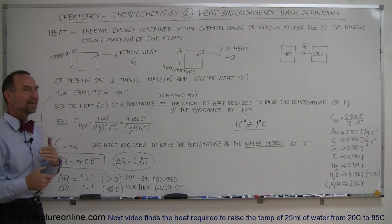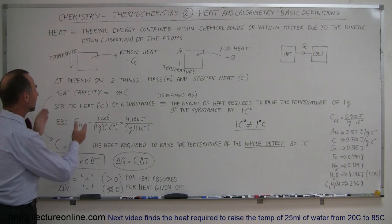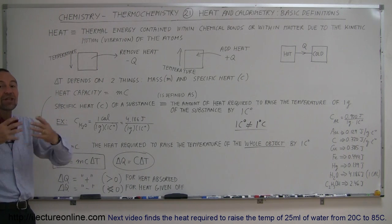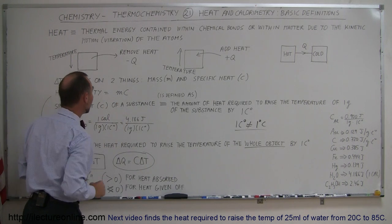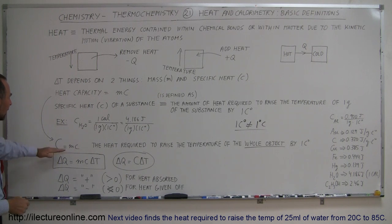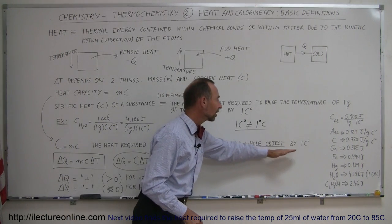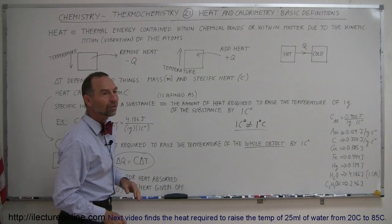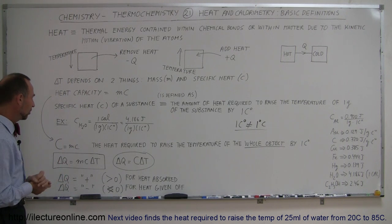Heat capacity is the capacity of how much heat an object can hold, which depends on both the mass and the specific heat of the object. A large object with a lot of mass can hold a lot of heat; a small object can hold a little bit. Heat capacity is simply the product of mass times specific heat — it's the heat required to raise the temperature of the whole object by one centigrade degree, not just one gram of it.